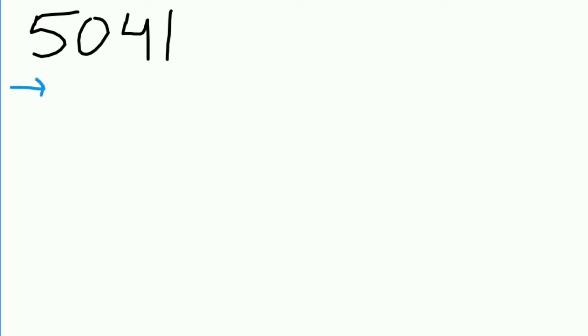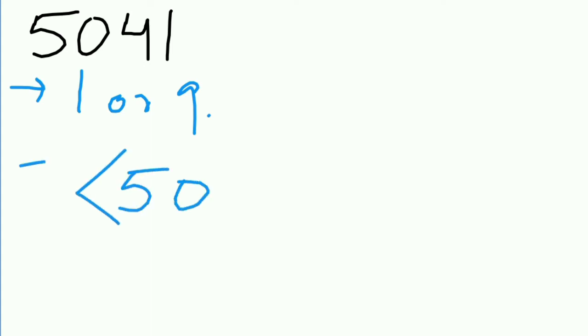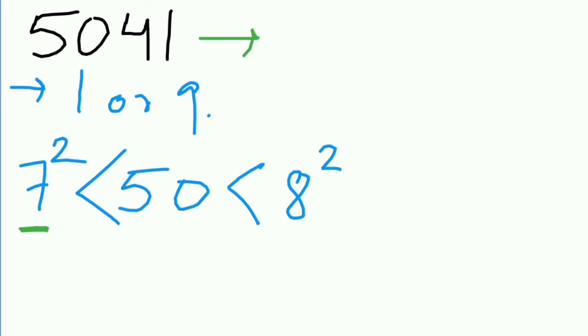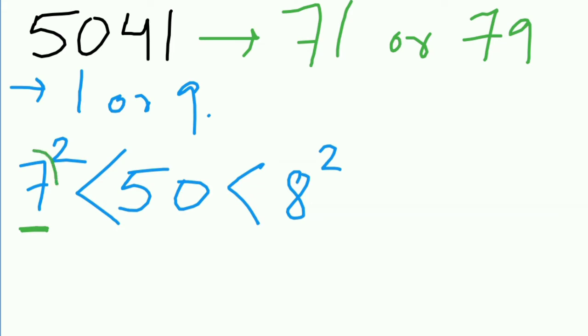Here is another example: 5041. If we take a look at its last digit, we can say the last digit of the square root will be 1 or 9. Now the first two digits are 50, which is greater than 7 squared and smaller than the square of 8. So the first digit of this square root will be 7. As far as now we can say the square root can be 71 or 79.